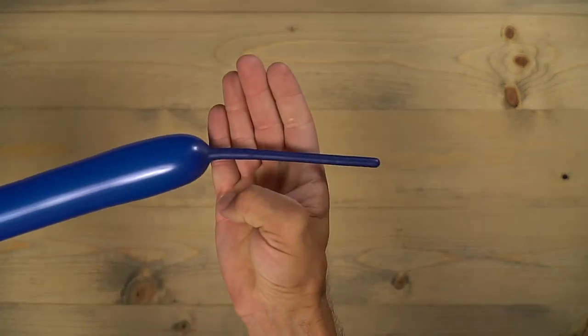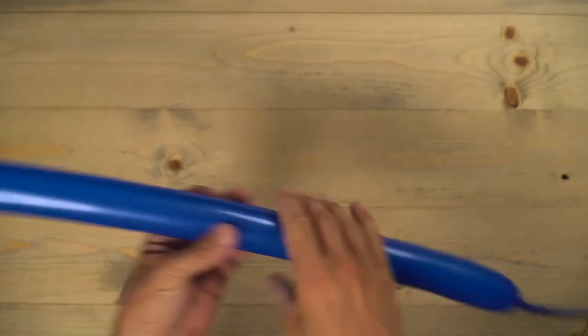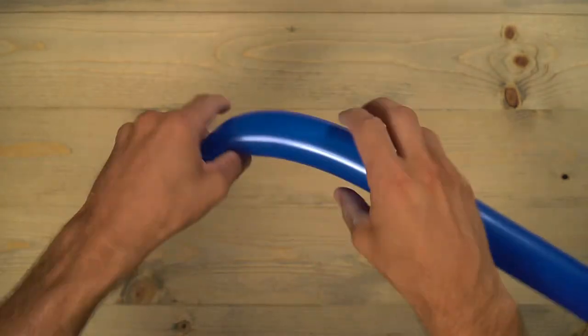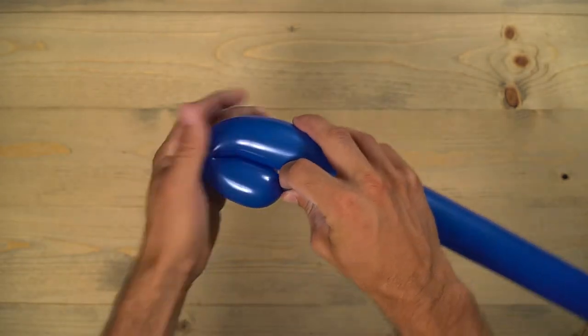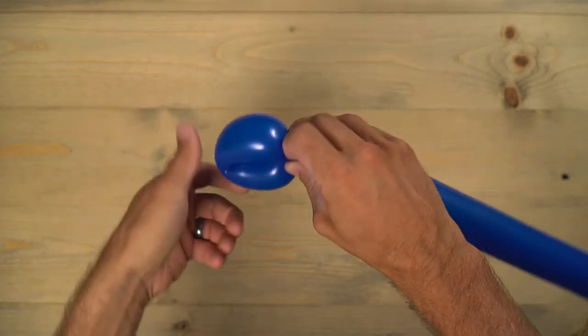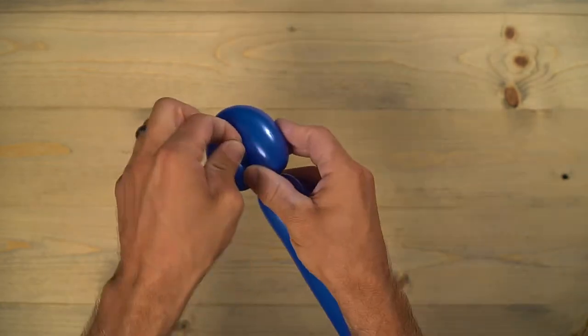Grab that first dark blue balloon. Start by making a loop twist there on the end. This is going to be the tail of the airplane.